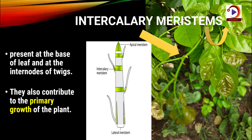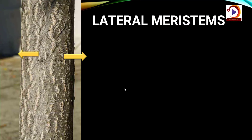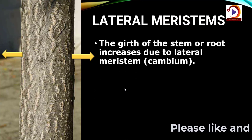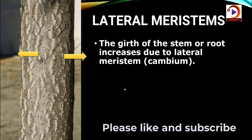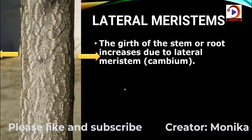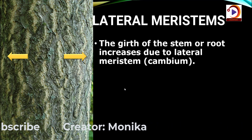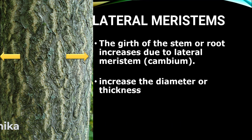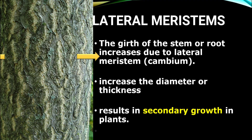Lateral meristems are accountable for increasing the girth — that is, the thickness — of the plant. This type of growth in plants is called secondary growth.